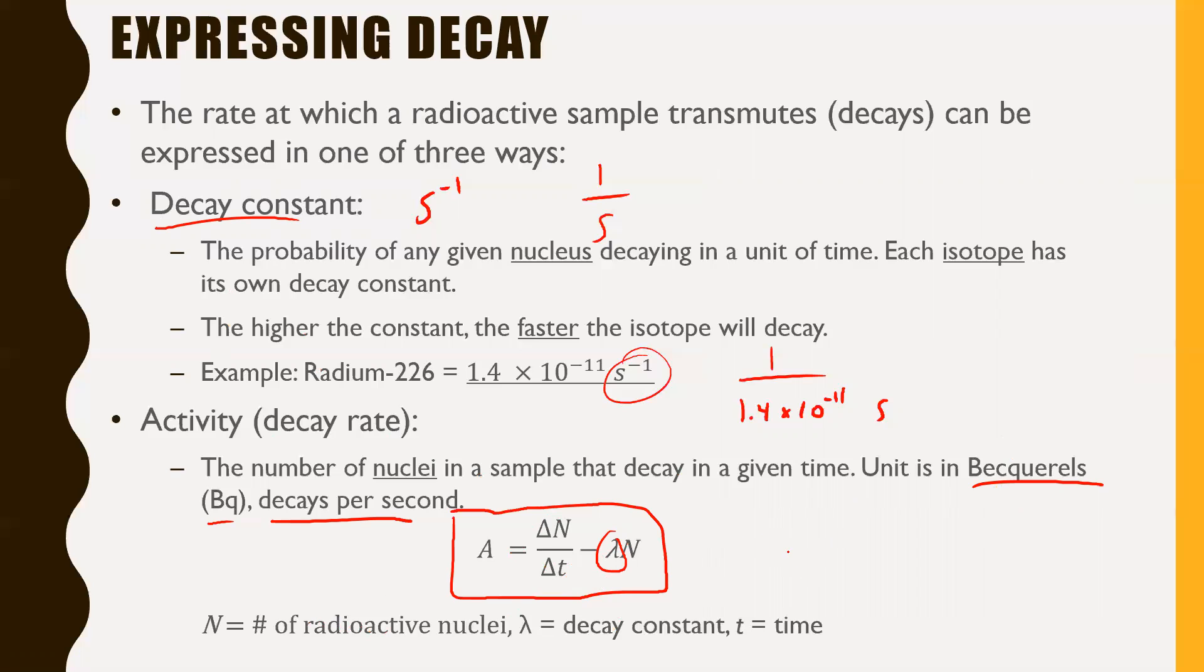So if you had something like, usually they're very high numbers, but if you had something like 2000 BQ, that just tells you that 2000 nuclei are going to decay every single second. So the higher number of Becquerels you have, the faster that thing is going to decay.